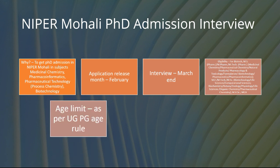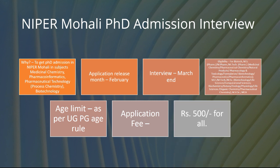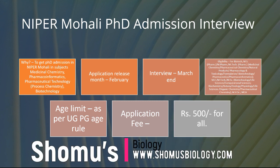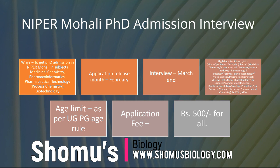The age limit follows UG/PG age rules — 28 years for those targeting undergraduate-level admission and 33 years for postgraduate-level PhD admission. The application fee is 500 rupees for all candidates, with no distinction between General, EWS, PWD, SC, or ST categories. At 500 rupees, this is an amount most people can afford, so NIPER Mohali is doing a good job in this regard.